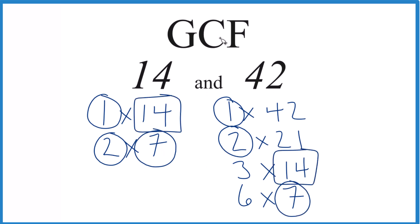So in answer to our question, the GCF for 14 and 42, that is 14. And you can use other methods like prime factorization, but unless you have a really big number, this works pretty well.